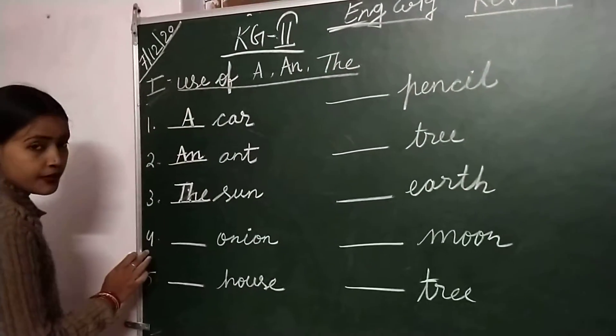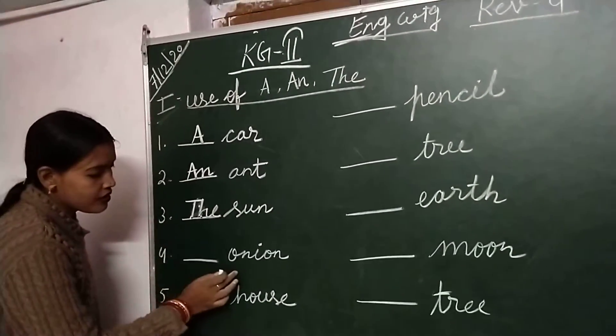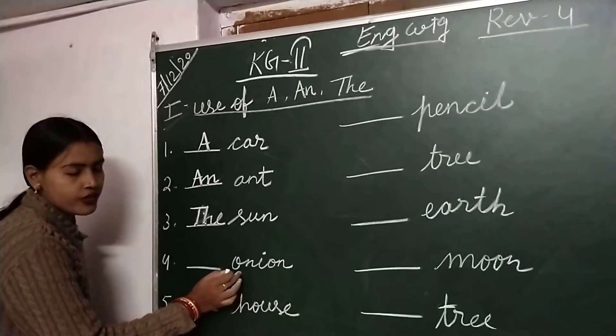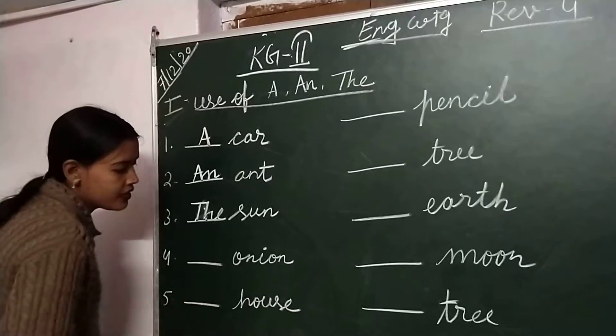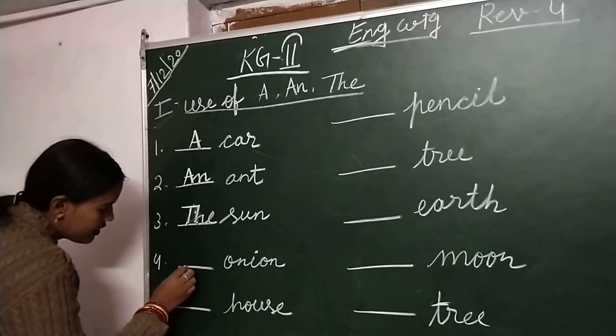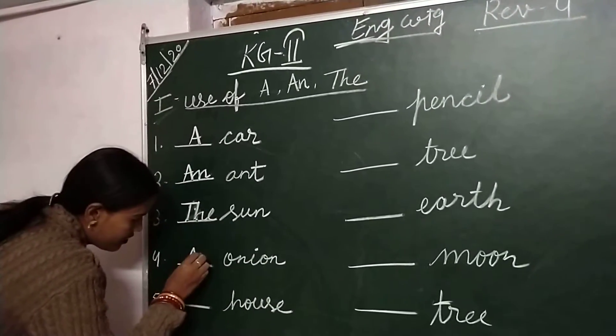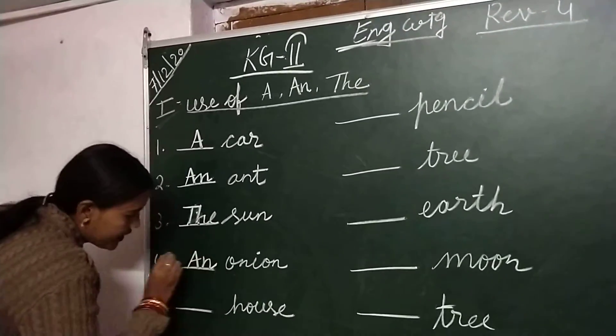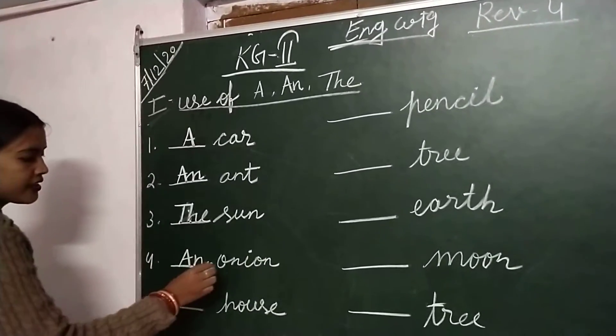Next, number 4 is onion. O-N-I-O-N, onion. Write down: an onion.